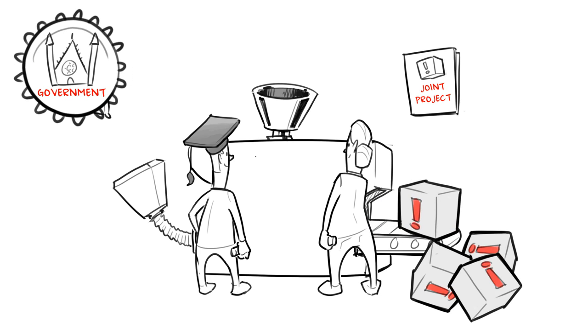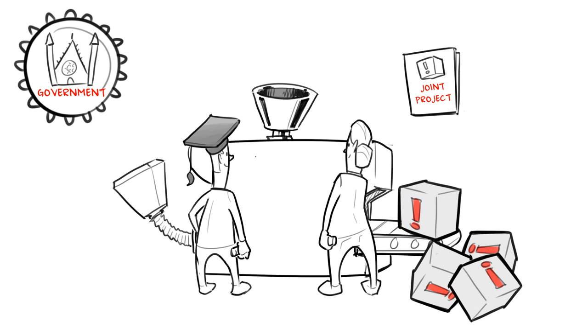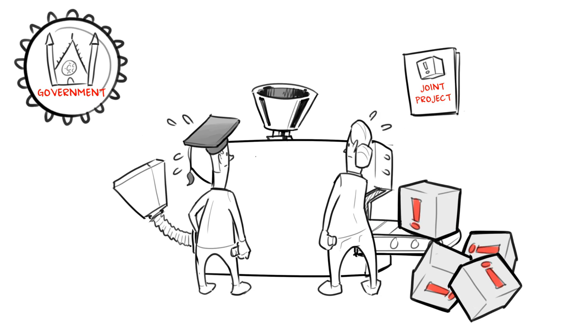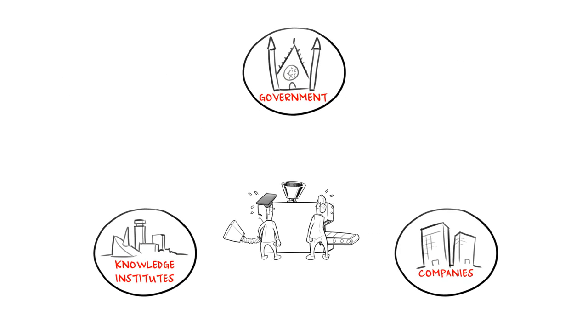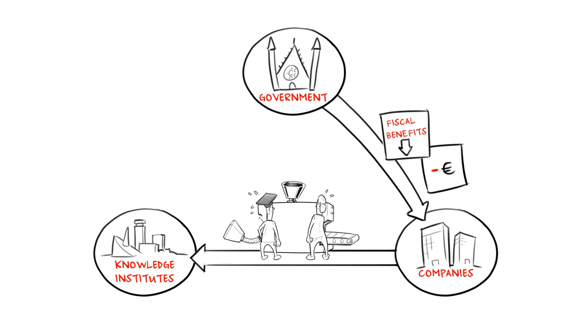But then this so-called financial crisis hit. Suddenly, a lot of the funding stopped or became more difficult to secure. The system changed. Now, funding for innovation is given to companies in the form of fiscal benefits. If businesses have joint projects with knowledge institutes, the funding comes after the project has started. It's a completely new situation for all parties.